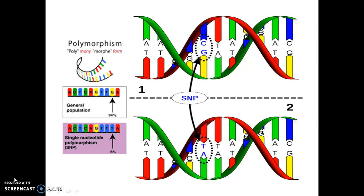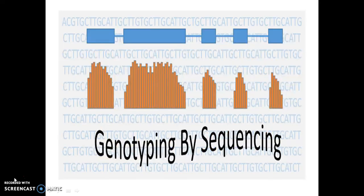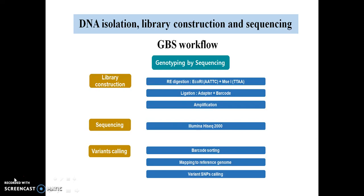SNPs are positions which differ in individuals by a single nucleotide. Also, SNPs are used because these are conserved during evolution. There are many different methods for detection of SNPs. One such is GBS, which is genotyping by sequencing. The steps involved are DNA isolation, DNA digestion with restriction enzymes, adapter ligation, library construction, sequencing, raw sequence data processing, and SNP discovery. In this experiment, the Illumina sequencing platform is used.